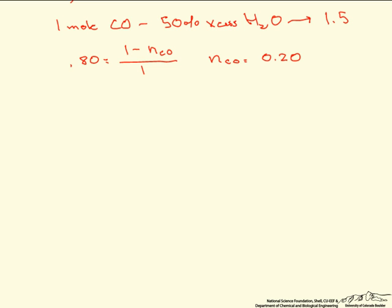That allows us to find the moles of CO coming out. It also allows us to find the extent of reaction, because the moles of CO out equal the moles in minus the extent of reaction. The reason it is negative is because it is a reactant and we are using it up, therefore our extent of reaction is 0.8.